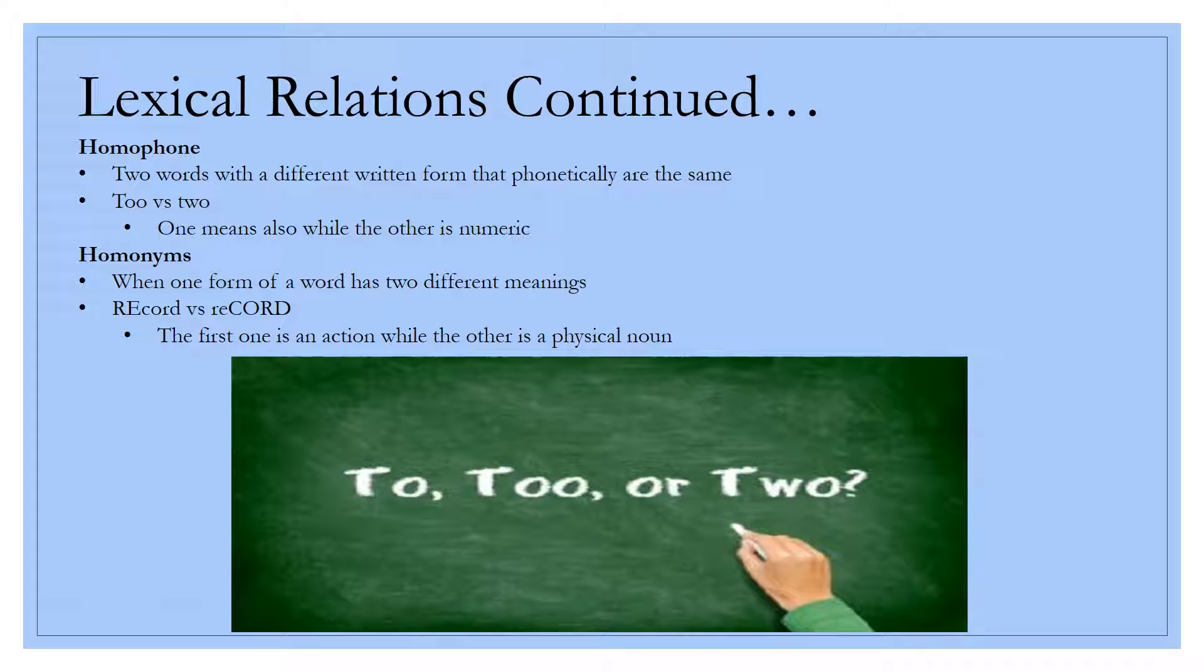Then you have homonyms, which are when one form of a word has two different meanings. So here I put down record versus record. The first one is going to be an action to record an album, while the other one is going to be a physical noun, a record you can go to the record store and buy.